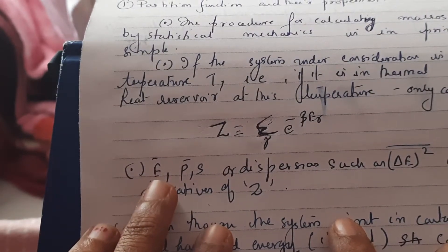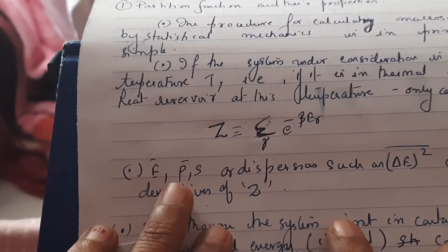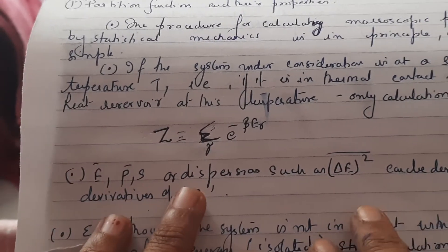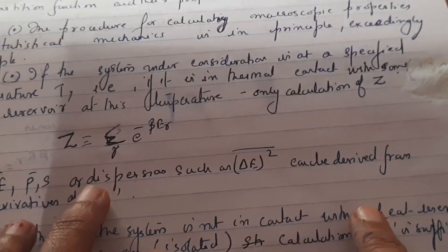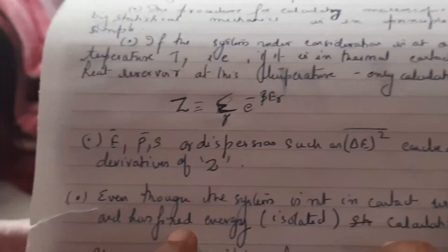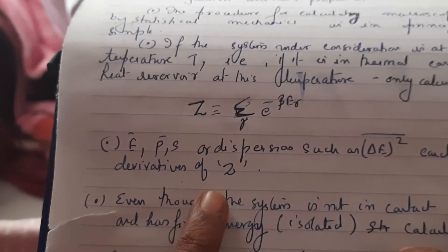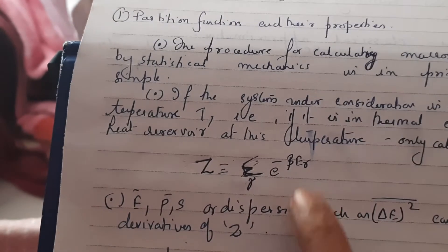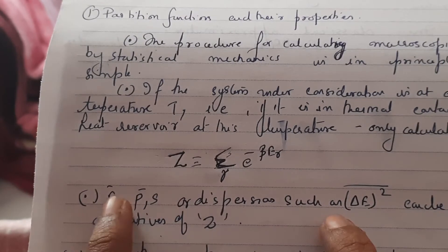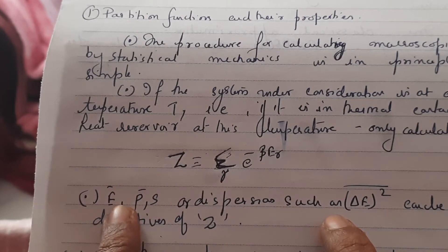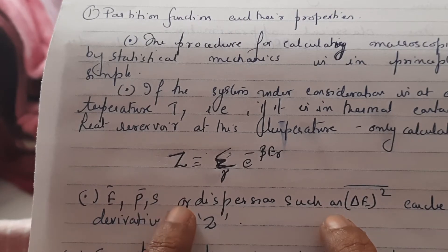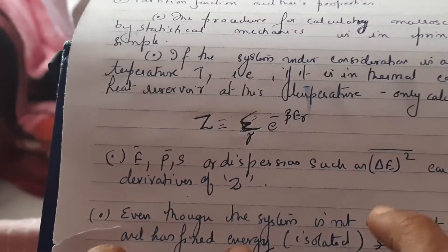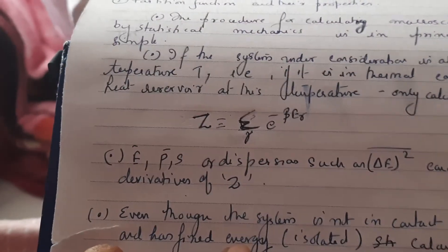The average mean energy, pressure, entropy, or dispersion such as delta E squared can all be derived from the derivatives of Z. So you just have to find the value of Z, and then you can find mean energy, pressure, entropy, dispersion — all these things. We will see examples of this further down.